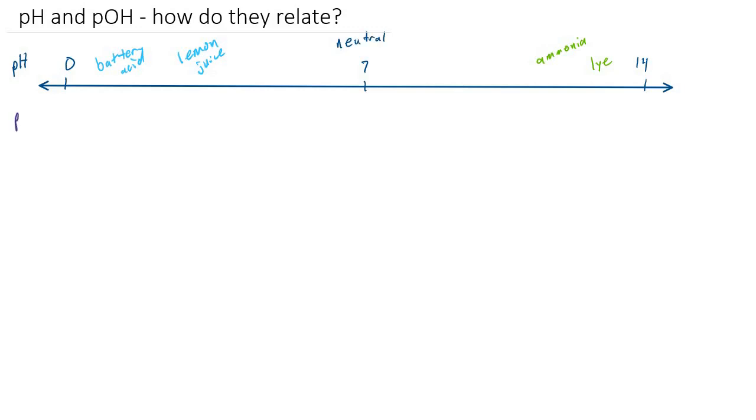So what's pOH then? pOH is exactly the opposite. There's 7 in the middle of the scale, but what is 0 on the pH scale is 14 on the pOH scale, and vice versa. So it is literally just numbered the other way around.